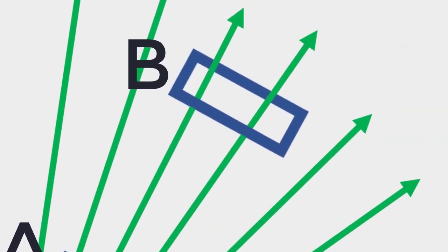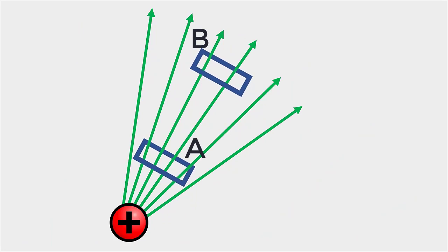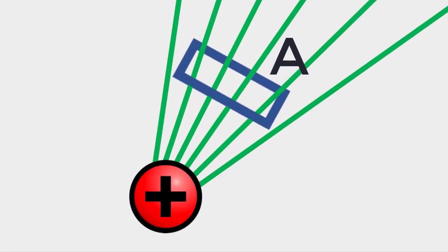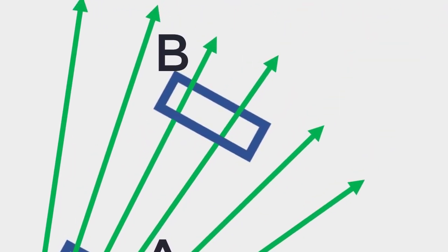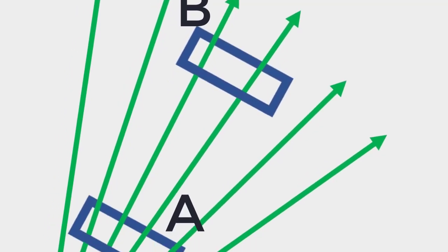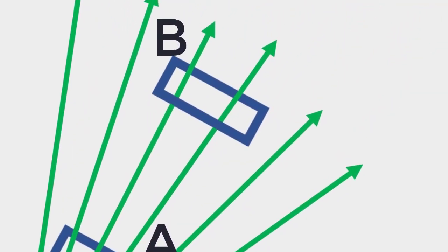The number of field lines cutting the area elements is proportional to the magnitude of the field at these points. Since there are more number of field lines at A, electric field at A is stronger than at B. So, the electric field decreases as the square of the distance from a point charge. But the number of field lines crossing a given area remains constant.